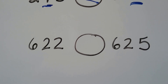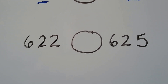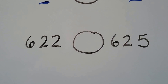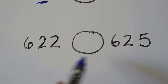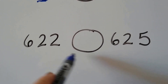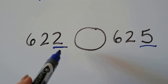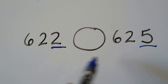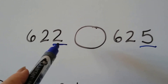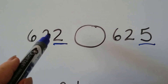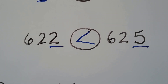Let's try this one: 622 or 625. What symbol goes in here? They both have six in the hundreds place. They both have a two in the tens place. So we have to look at the ones place. This has two in the ones place, this has five in the ones place. Two is not as much as five, so this is less. 622 is less than 625.